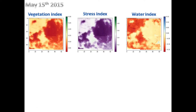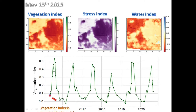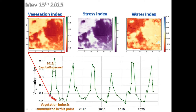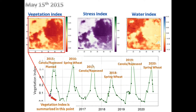We collected satellite data from May 15, 2015, just before summer started, and continued until the end of harvesting season in 2020, and plotted the historical vegetation index of the farm. Each data point in the graph is the average NDVI of the farm for the date the satellite image was taken.